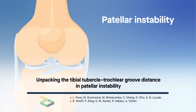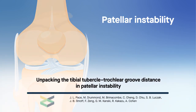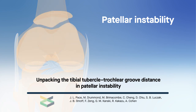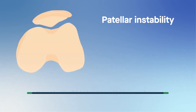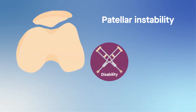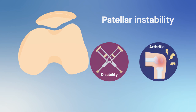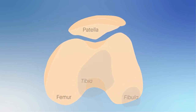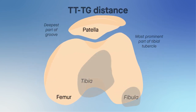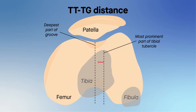Patellar instability is a condition that primarily affects young patients. A chronically unstable kneecap can predispose patients to disability and early arthritis. One measure used to gauge the risk of patellar instability is the TT-TG distance — that's the distance from the tibial tubercle to the trochlear groove.